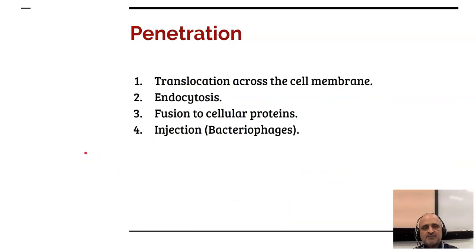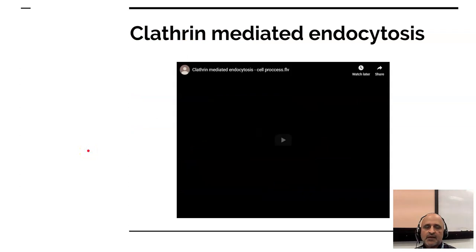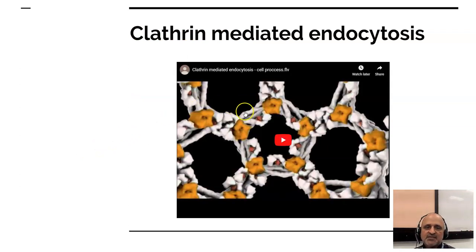The next stage is penetration. The virus will translocate across the cell membrane and undergo a process known as endocytosis. It will fuse to cellular proteins, or in the case of bacteriophages, it will inject the nucleic acid — the DNA — into the bacterial host. Endocytosis is mediated by a process known as clathrin-mediated endocytosis, where clathrin and epsin interact with each other to produce a molecule which can transpass the cellular boundary.